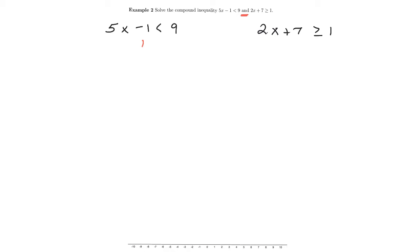I think I'll add one to both sides here, which gives me 5x is less than 10. On the other one, I'm going to subtract 7 from both sides. And I get that 2x is greater than or equal to negative 6.